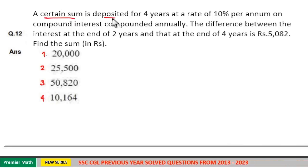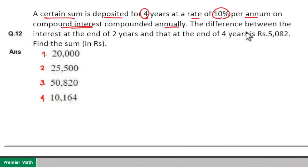A certain sum is deposited for 4 years at a rate of 10% per annum on compound interest compounded annually. The difference between the interest at the end of 2 years and at the end of 4 years is Rs. 5,082. Find the sum.